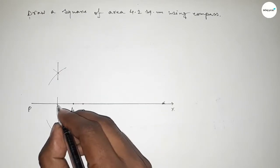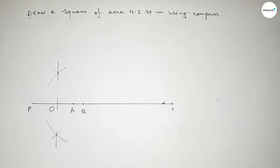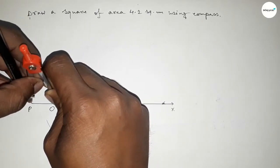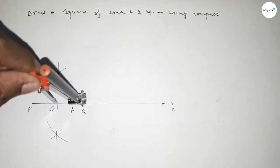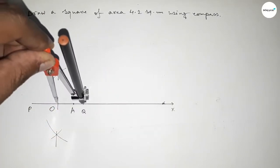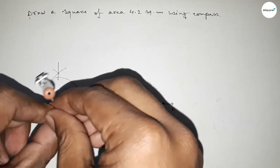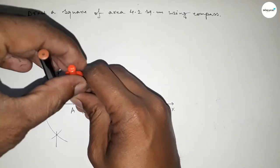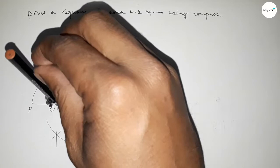The joining line meets line PX at a point — mark this as point O. Using the compass, take the length OP (equal to OQ) and draw a semicircle through points P and Q. Next, construct a 90-degree angle at point A by placing the compass on A, taking any length, and drawing an arc.